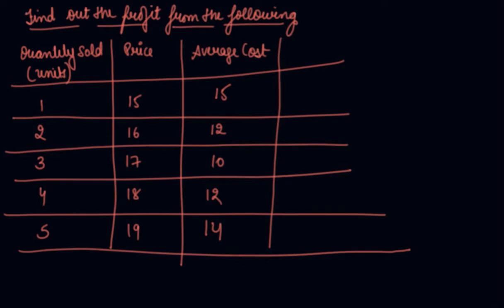For producer equilibrium we have to find out your total revenue minus total cost, which is your profit. This was the formula. We can find out your total revenue by price into quantity. That is 15, 32, 17 into 3 is 51, then 18 into 4 is 72, and 19 into 5 is 95.